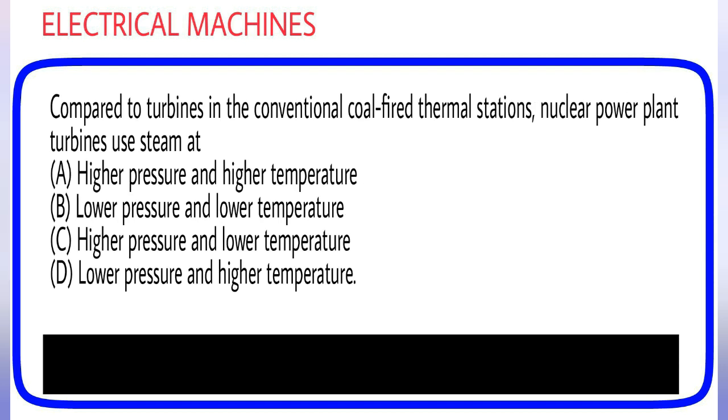Compared to turbines in the conventional coal-fired thermal stations, nuclear power plant turbines use steam at: (A) Higher pressure and higher temperature, (B) Lower pressure and lower temperature, (C) Higher pressure and lower temperature, (D) Lower pressure and higher temperature. Answer is option B.